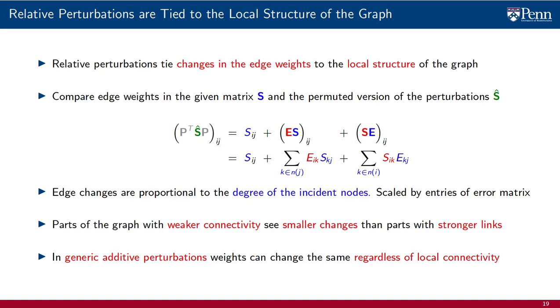This is in contrast to absolute perturbations, where edge weights can change by the same amount, regardless of the local connectivity of the graph. Do notice that relative perturbations, as defined here, are still a little more arbitrary than we would like them to be. We can still change weight S ij by a large amount if i or j have large degrees, even though the weight S ij itself may be small. There is still room to sharpen perturbation models of shift operators relative to what we are going to study in this course.